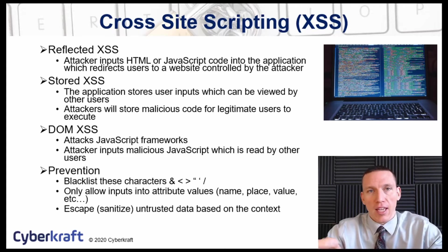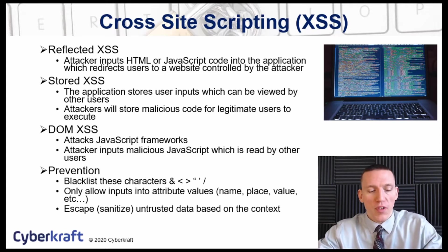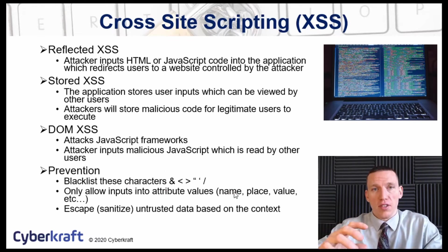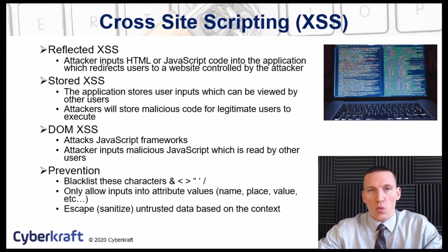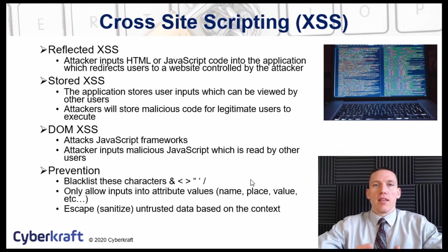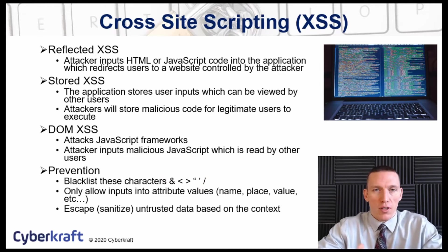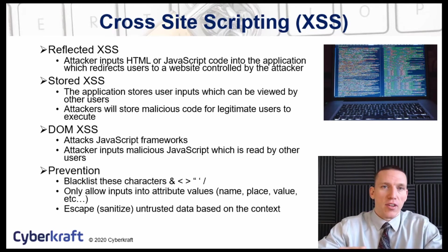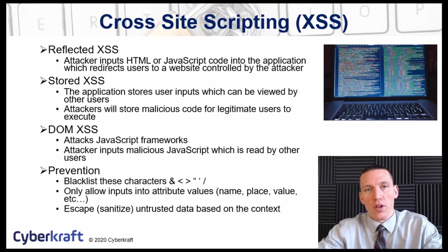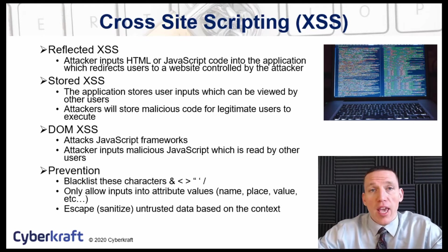Cross-site scripting is a common attack against web applications. How you prevent it is by blacklisting — you create a list of prohibited characters. These are one of the main prevention areas. By blacklisting characters, especially the apostrophe, you make it difficult for the attacker to input code, because without special characters, the attacker cannot create code that can be executed.